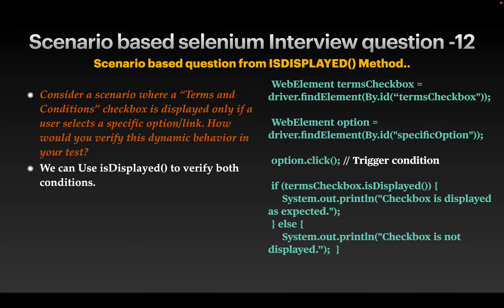Next question: consider a scenario where you have to verify that a terms-and-conditions checkbox is displayed only if the user selects a specific option or link — how would you verify this dynamic behavior? Understand the question: the checkbox is displayed only if a user clicks a specific link on the web page. We can verify this simply using the isDisplayed() method — trigger the action first, then verify using isDisplayed() whether the checkbox is present.